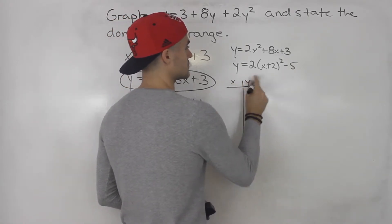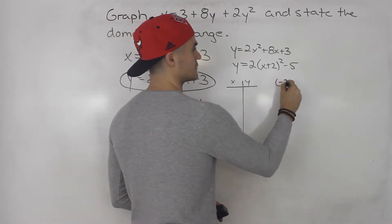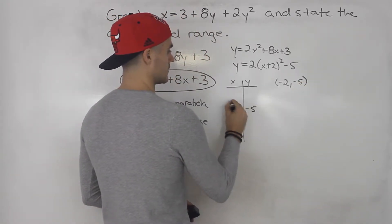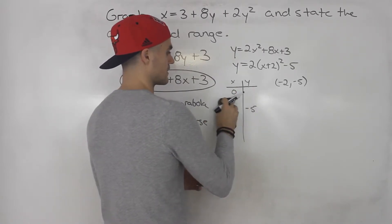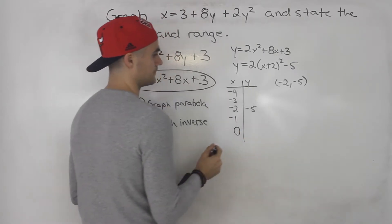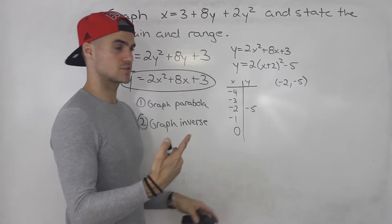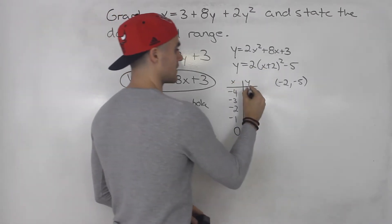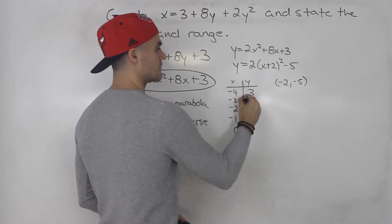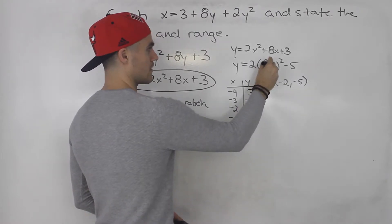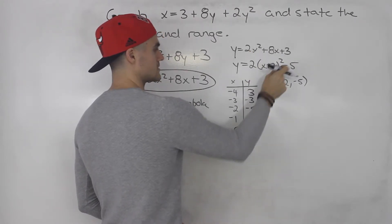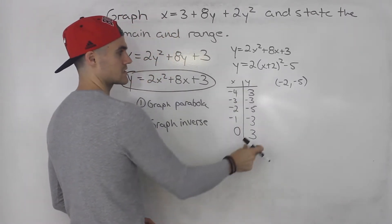To graph this, let's make a table of values with the vertex in the middle. The vertex is at negative 2 and negative 5. Our x values are negative 4, negative 3, negative 2, negative 1, and 0. Plugging in negative 4: negative 4 plus 2 is negative 2, squared is 4, times 2 is 8, minus 5 gives positive 3. Plugging in negative 3: negative 3 plus 2 is negative 1, squared is 1, times 2 minus 5 gives negative 3. Similarly, negative 1 gives negative 3 as well — notice it's nicely symmetrical.